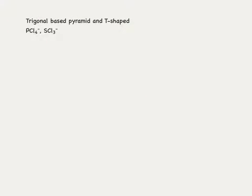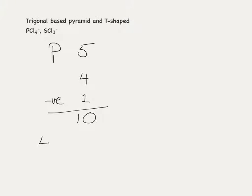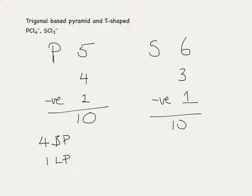Now we're going to look at the see-saw and T-shaped structures, which are based on five-pair electron systems. For PCl4-: phosphorus is in group five, four bonds to chlorine, and a negative charge gives us a plus one to the count, giving ten electron pairs — four bond pairs and one lone pair. For sulfur trichloride SCl3-: sulfur is in group six with six electrons in the outer shell, three bonds to chlorine, one negative charge, giving a total of ten electron pairs — three bond pairs and two lone pairs.